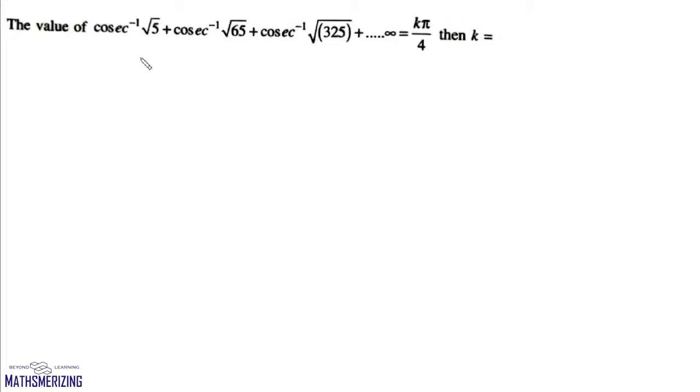The problem is we need to find the value of cosec inverse root 5, cosec inverse root 65, cosec inverse root 325, and it goes all the way up to infinite. What we'll do is change each of this expression in terms of tan inverse.